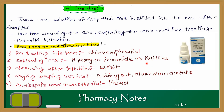Third, for cleaning after infection — spirit or alcohol is used because it is antiseptic. Fourth, for drying the dripping surface — estrogen and aluminum acetate are used. Fifth, for antisepsis and anesthesia — phenol can be used to kill germs or treat pain.